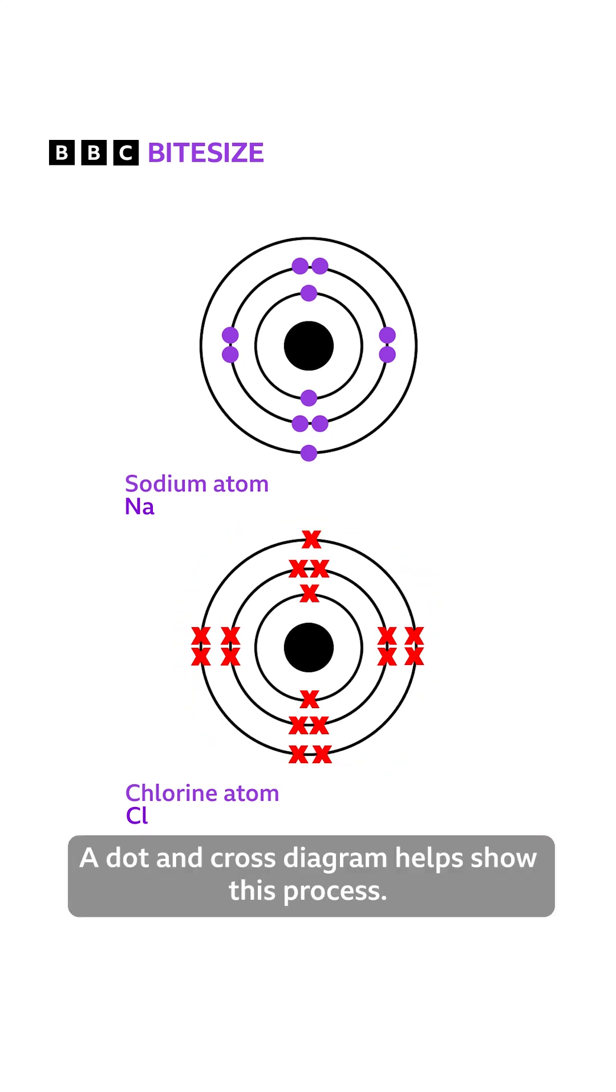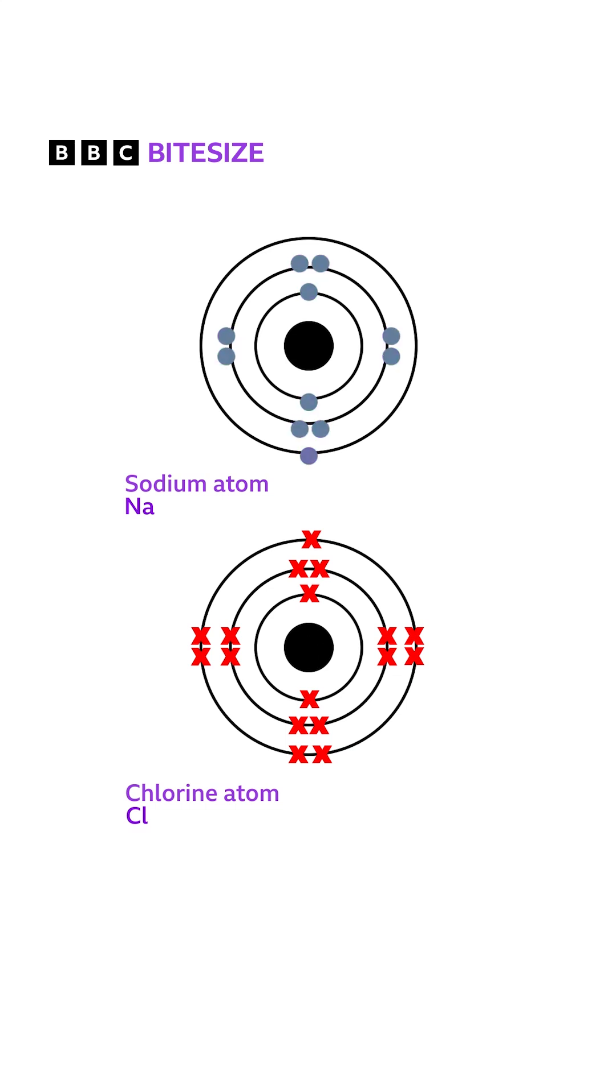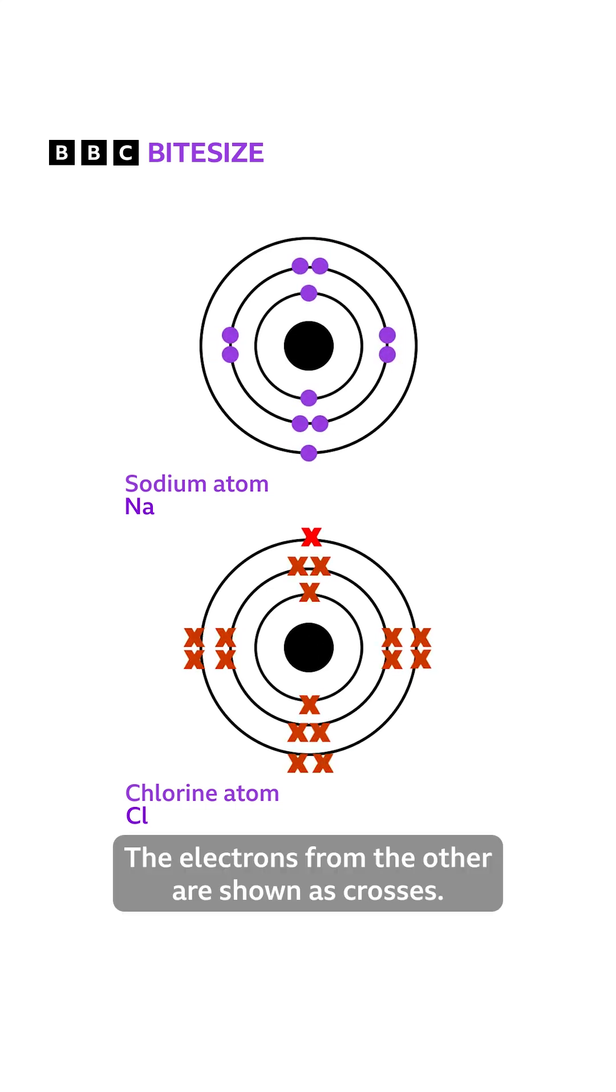A dot and cross diagram helps show this process. The electrons from one atom are shown as dots, and the electrons from the other are shown as crosses.